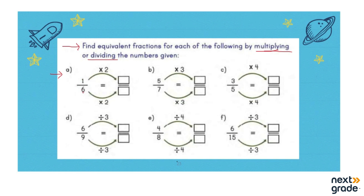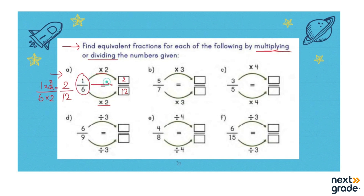Let's solve part A together, in which they have 1 over 6. 1 over 6 is a fraction and you have to find the equivalent fraction. What we are doing is multiplying the numerator and the denominator both with the same number. So: 1 multiplied by 2 is 2, and 6 multiplied by 2 is 12. So we write 2 over 12. That means 1 over 6 is equivalent to 2 over 12.